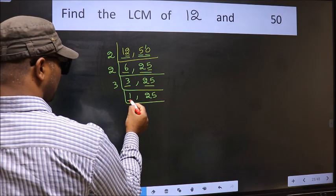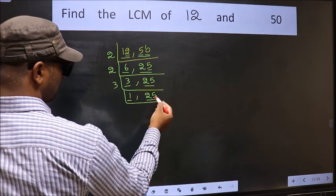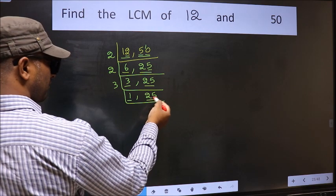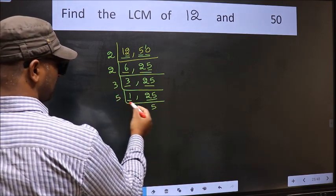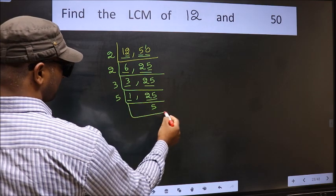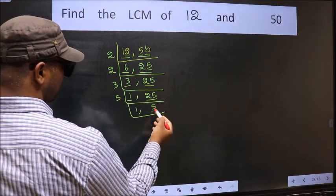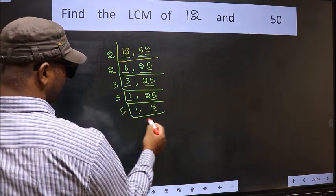Now we got 1 here, so focus on the other number 25. 25 is 5 times 5. Now we have 5 here. 5 is a prime number, so 5 and 5.